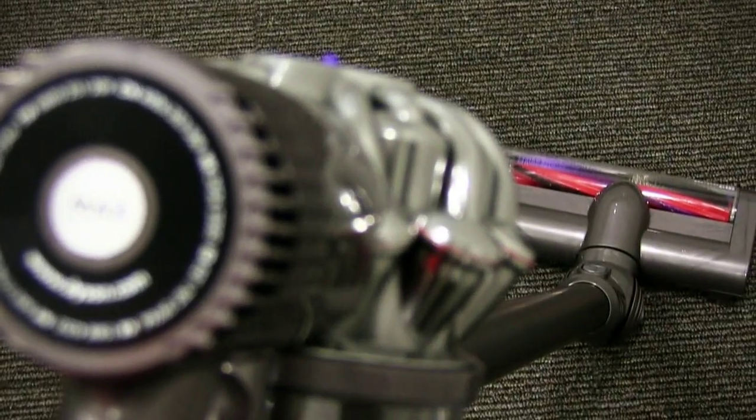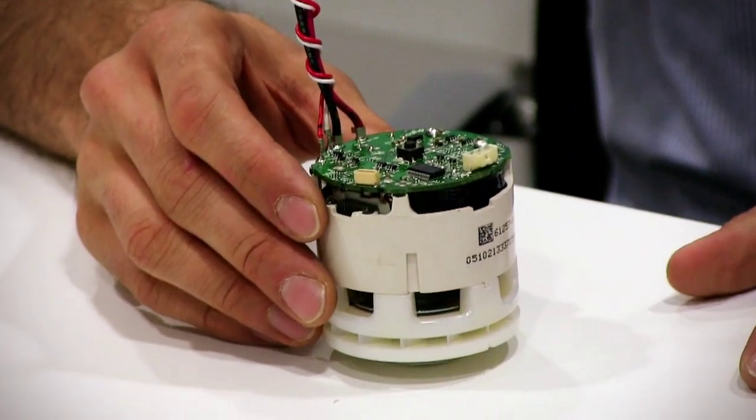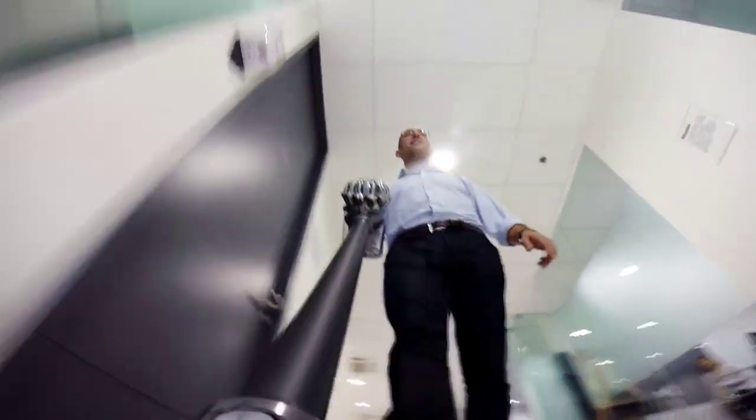One of the motors we manufacture here is the V6 motor which goes into our DC62 stick handheld vacuum cleaner. The V6 is a brand new motor platform for us that doubles the motor power that we have in our handheld machines.